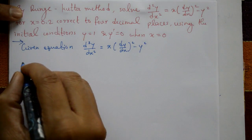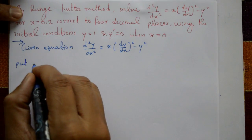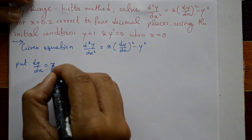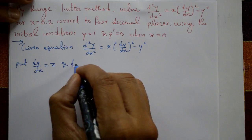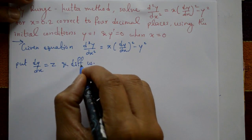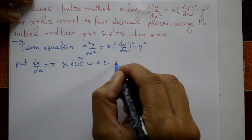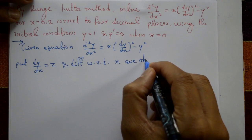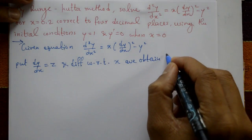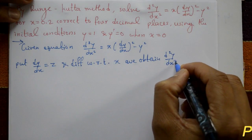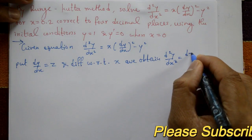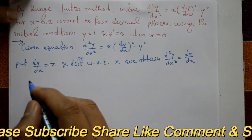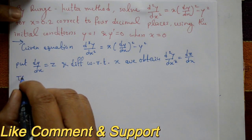We put dy/dx = z, and differentiating with respect to x, we obtain d²y/dx² = dz/dx. Substituting into the given equation gives a new form.